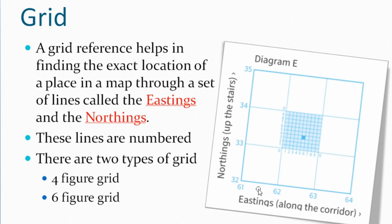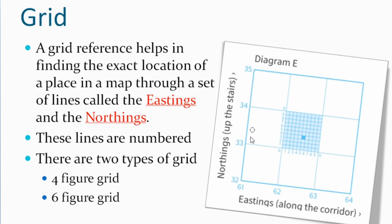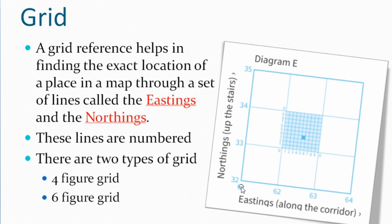So first try to understand what is Easting and what is Northing. Easting means vertical line — 61, 62, 63 — these are the vertical lines, these are called Eastings. Then Northing means the horizontal line — 32, 33, 34, 35 — this is Northings. So when we go Northings we are going upward and when we go Eastings we are going sidewards. Always remember: in the grid, Easting always comes first — Easting first, after that the Northings.